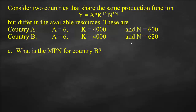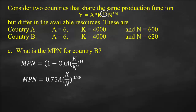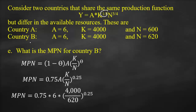For the marginal product of labor for Country B, we use the formula: MPN = (1-θ) × A × (K/N)^θ, with (1-θ) = 0.75 and θ = 0.25. Substituting A = 6, K = 4,000, and N = 620: MPN = 0.75 × 6 × (4000/620)^0.25.